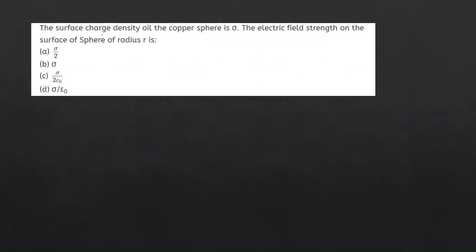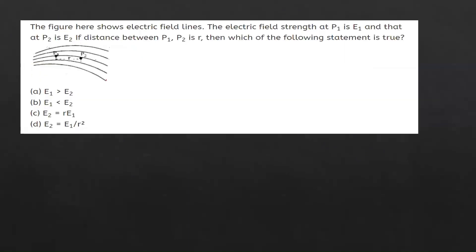The surface charge density of a copper sphere is sigma. What is the electric field strength on the surface of the sphere of radius r? For any conductor, the electric field strength at the surface is sigma upon epsilon-zero.